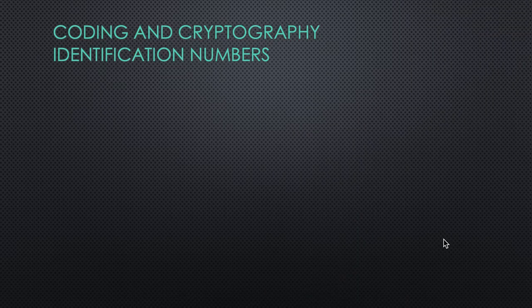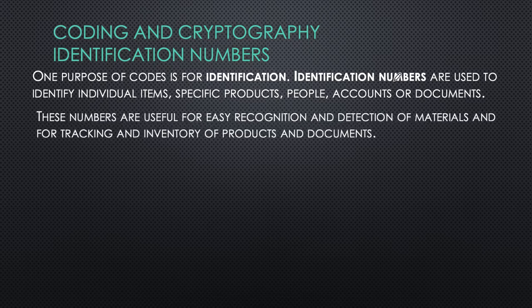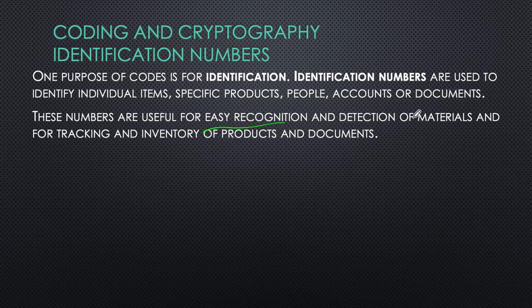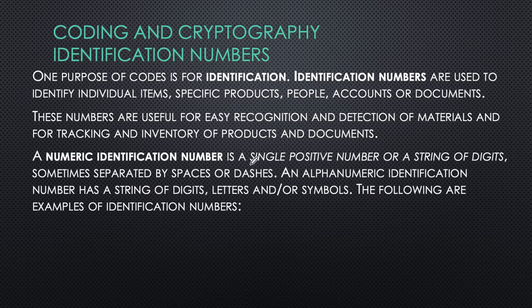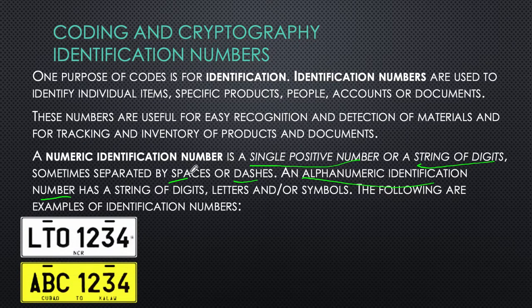Codes are also used for identification numbers. One purpose of codes is for identification. Identification numbers are used to identify individual items — more specifically, products, people, accounts, or documents. These numbers are useful for easy recognition and detection of materials and for tracking inventory. A numeric identification number is a single positive number or string of digits, sometimes separated by spaces or dashes. An alphanumeric identification number has a string of digits, letters, and/or symbols.